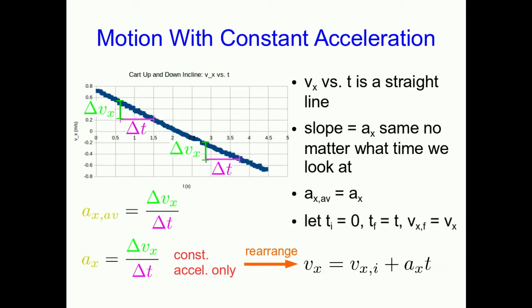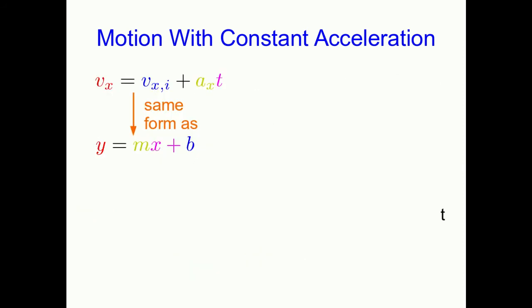Now if we again just let ti be zero, we're talking about some later tf, might as well just call it t. And as long as we're calling that t, we might as well call our final vx just plain old vx. So now we have the equation in this form.